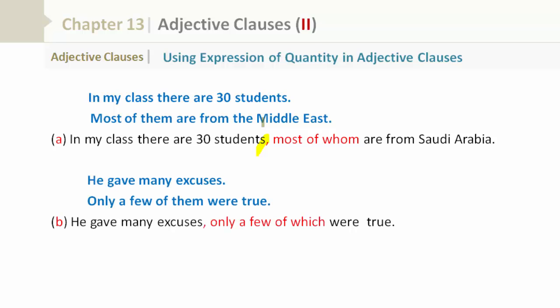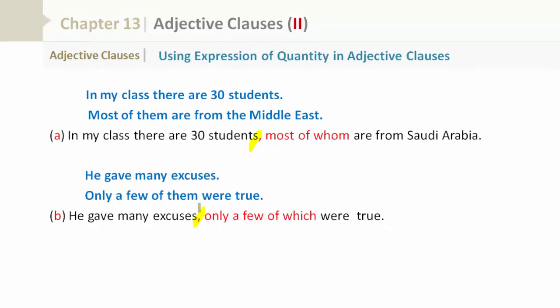He gave many excuses, only a few of them were true. Here's how we put it together, using expressions of quantity. He gave many excuses, comma, only a few of which were true.